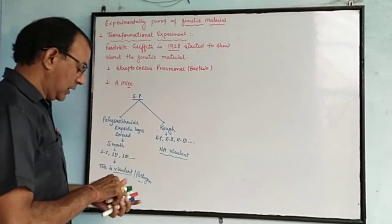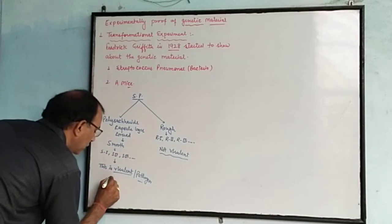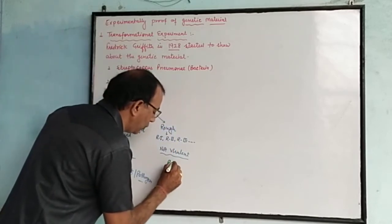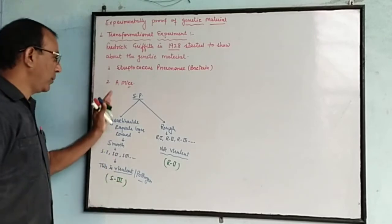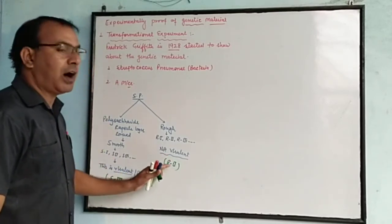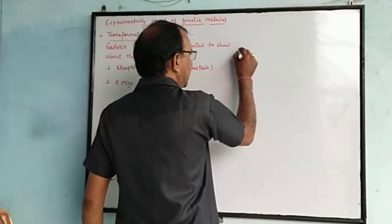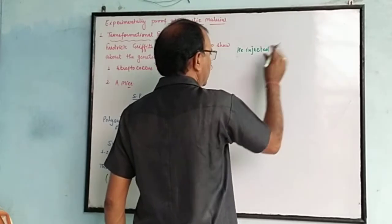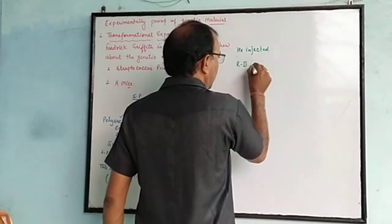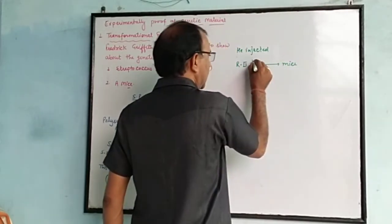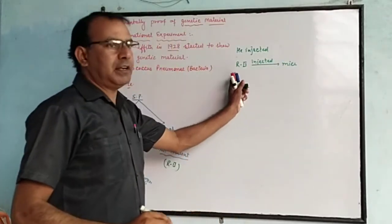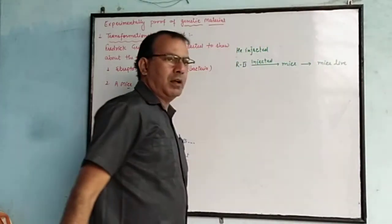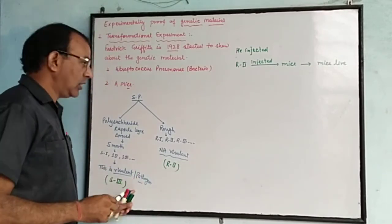For his experiment, Griffith chose S3 strain of smooth Streptococcus pneumoniae and R2 strain of rough Streptococcus pneumoniae. He experimented on mice. Firstly, he injected R2 bacteria into the mice, and he saw that the mice lived.